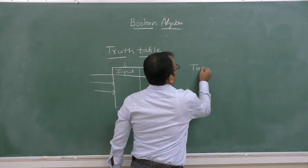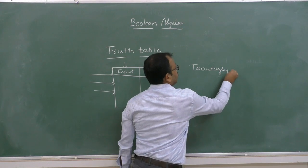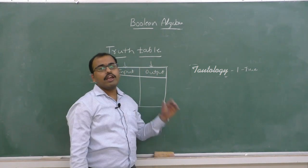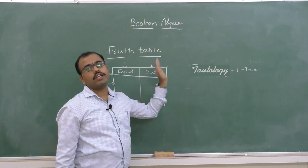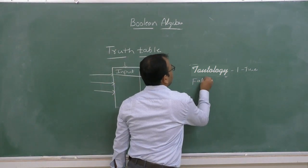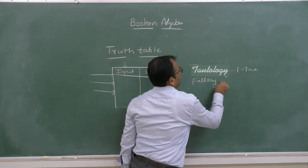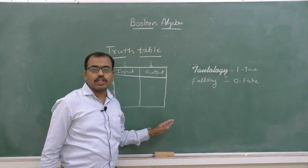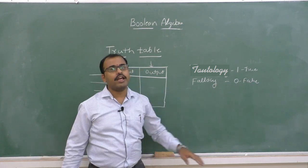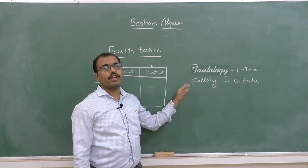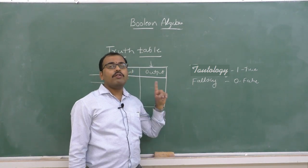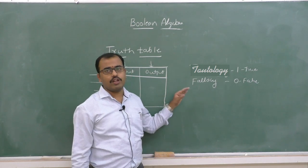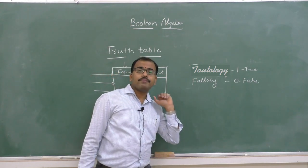If a result of a statement is always true, then it is called as tautology. If a result of a statement is always false, then it is called as fallacy. This is a very important question for one mark in board exams — define tautology or define fallacy.